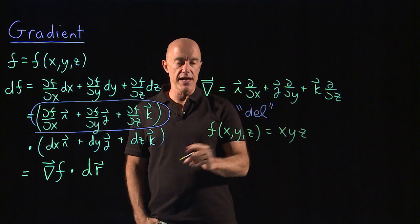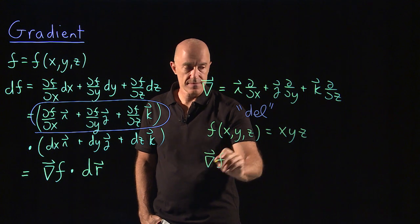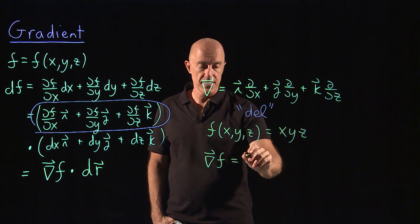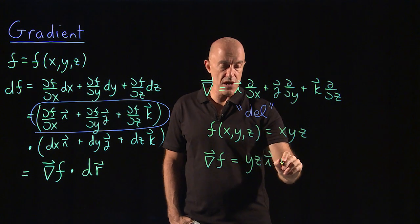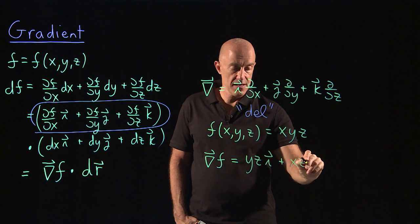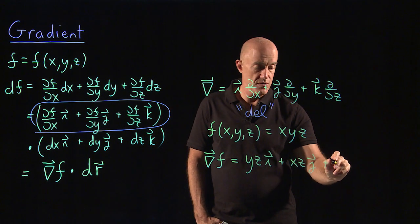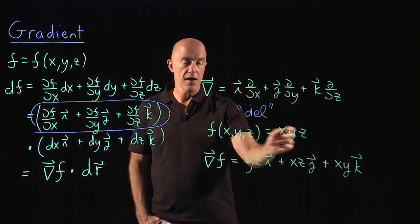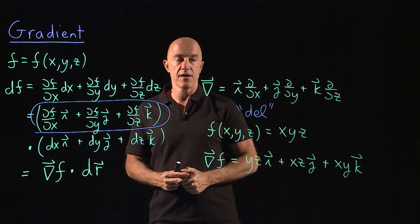So ∇f is going to be the partial of f with respect to x, which is yz in the i direction, plus the partial of f with respect to y, which is xz in the j direction, plus the partial of f with respect to z, which is xy in the k direction. A very simple computation of del f or the gradient of f.